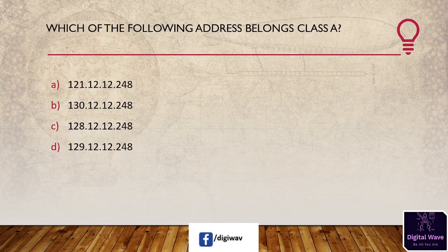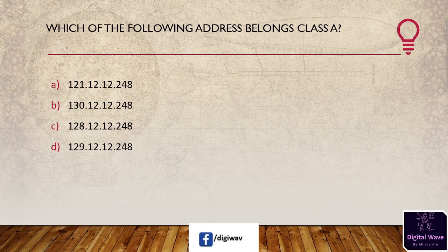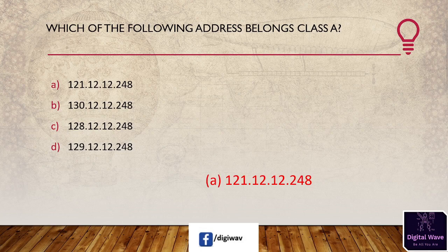Next question: which of the following addresses belongs to class A? Options are: 121.12.12.248, 130.12.12.248, 128.12.12.248, 129.12.12.248. The answer is A, 121.12.12.248. This address belongs to class A because the first octet value of this address lies between 0 and 127.